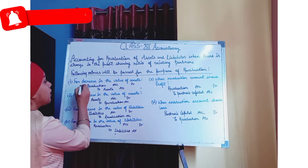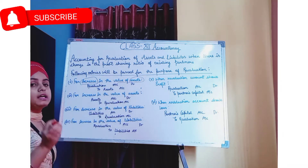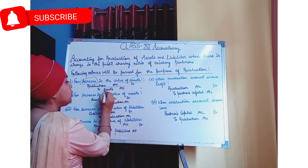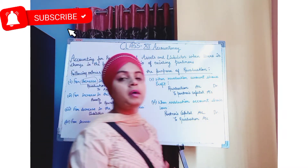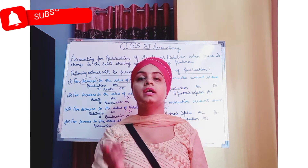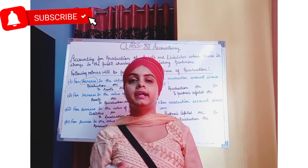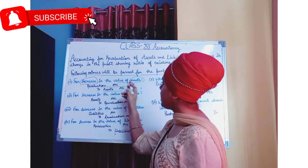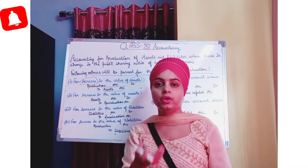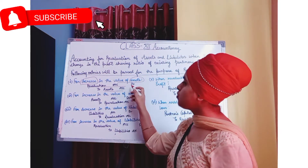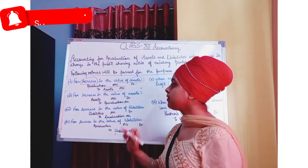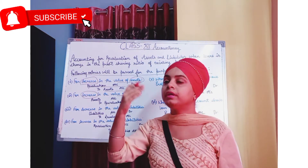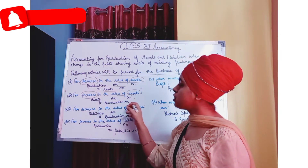The first journal entry is for Decrease in the value of an asset. When our asset's value decreases, the entry is: Revaluation Account Debit, To Asset Account. The second entry is for Increase in the value of an asset. When our asset's value increases, the entry is the opposite: Asset Account Debit, To Revaluation Account.